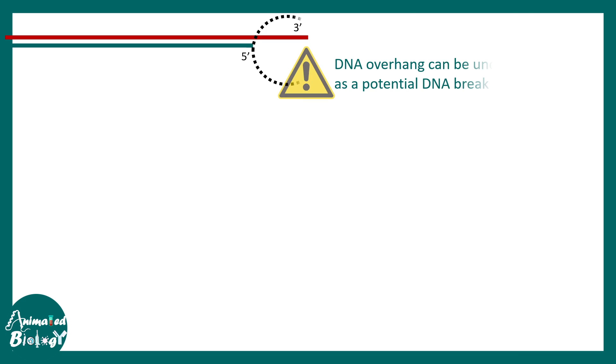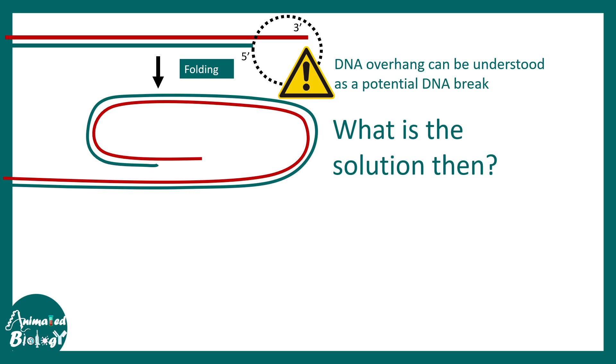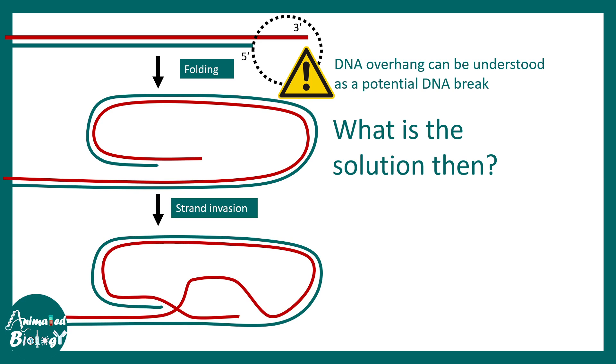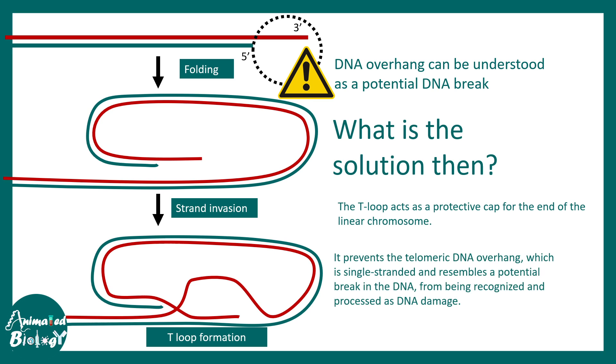But the end of this particular telomere still has a small overhang. That can be understood as a potential DNA break by the overall DNA repair machineries. So how does cell overcome this problem? It's very easy. Don't allow the enzymes to recognize this. And this is basically achieved by folding the particular end in format of a loop. Eventually the strand invasion happens and a T-loop formation occurs at the end. Which makes the overall overhang totally inaccessible to any enzymes which is going to repair or any kind of exonuclease. This is how the end of the chromosomes are actually protected.